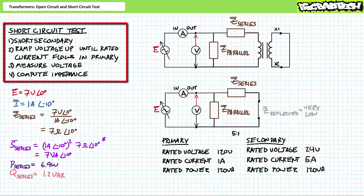In summary, to perform the short circuit test on a transformer: one short-circuits the secondary and then slowly ramps voltage applied to the primary from zero up until the rated current flows in the primary. This ordinarily requires a very small voltage and this test must be conducted with utmost care and vigilance. The impedance, apparent real and reactive power consumed by the series impedance inside the transformer equivalent circuit can then be calculated by an individual well-versed in AC Ohm's law and power calculations.